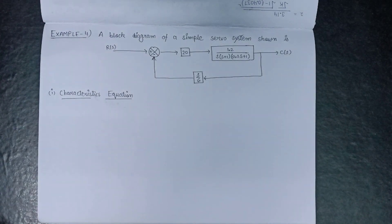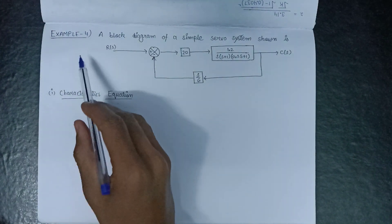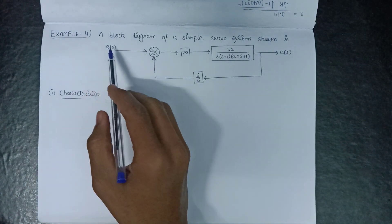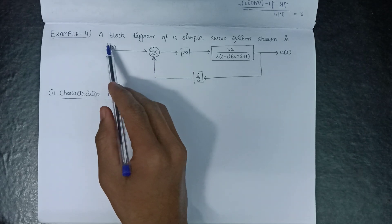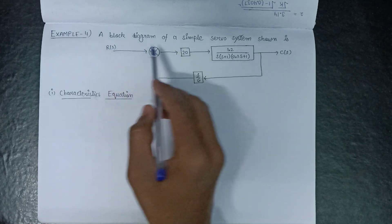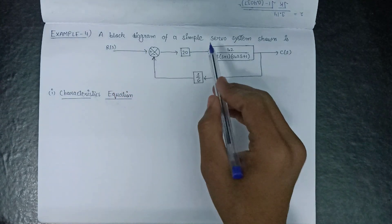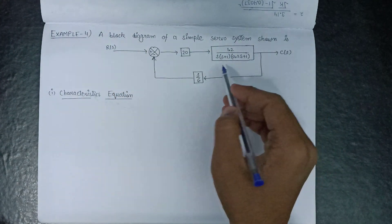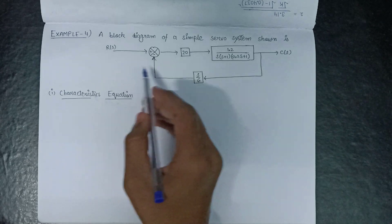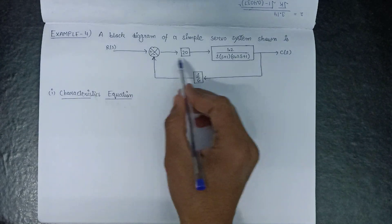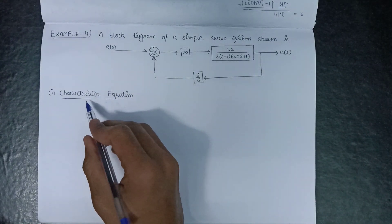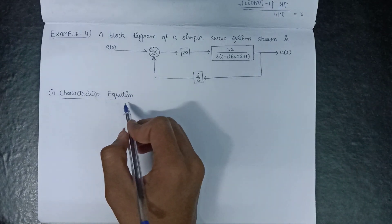Welcome all. In this lecture we are going to solve example number 4. In this example, a block diagram of a simple servo system is given, and we need to find out the characteristic equation.